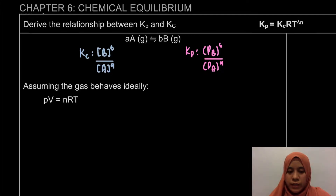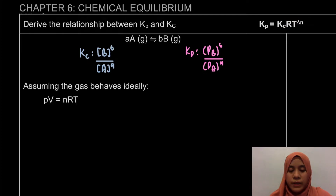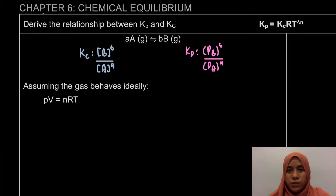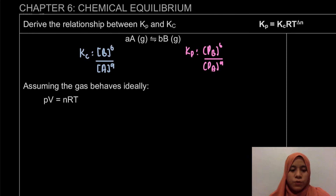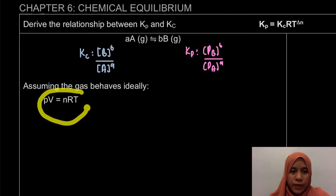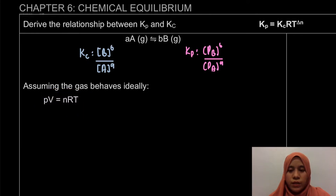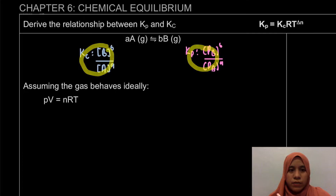Now, where do we get RT? It's actually from our ideal gas equation. PV equals nRT. And this equation is also used when the species itself is actually in gaseous state. So we'll take it from the ideal gas law.